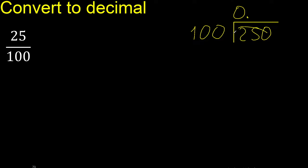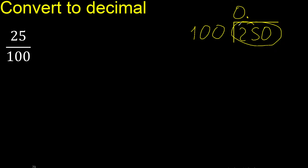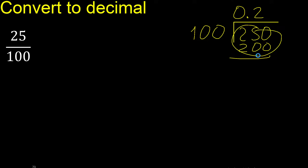0 point is not less, therefore 100 multiplied by which number is nearest to 150 but not greater — multiplied by 3 is 300, which is greater. Therefore multiplied by 2 is 200, subtract 50. There is no number that goes down, therefore complete — always complete with 0. Point is here.